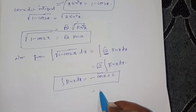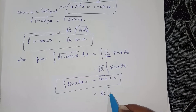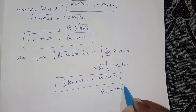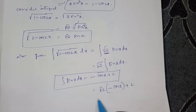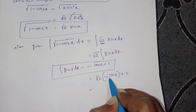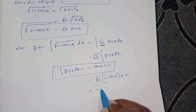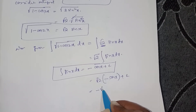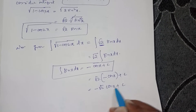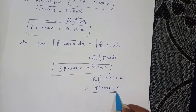So the result is √2 · (-cosx + C), which gives -√2 cosx + C. This is the final solution.